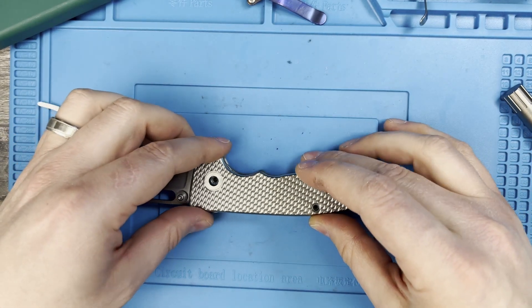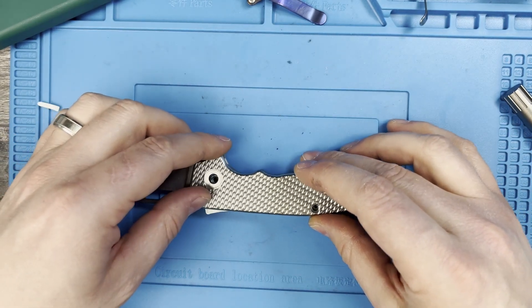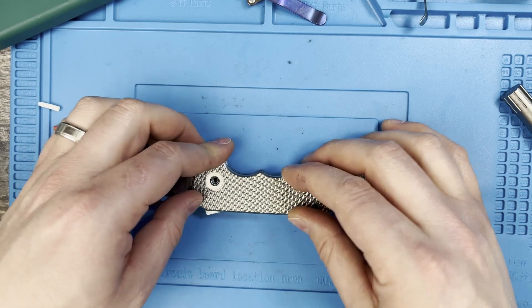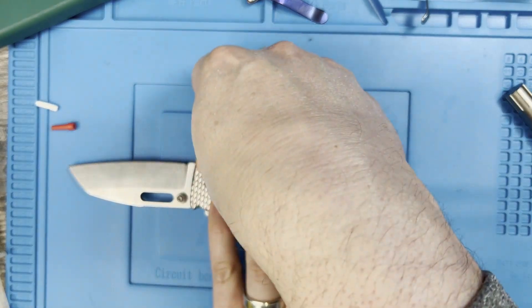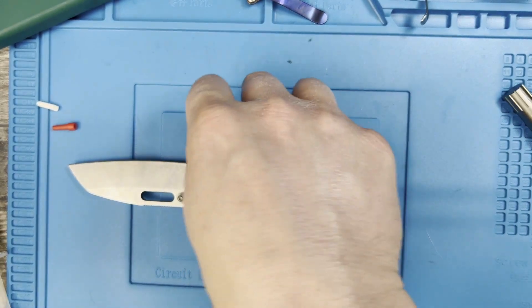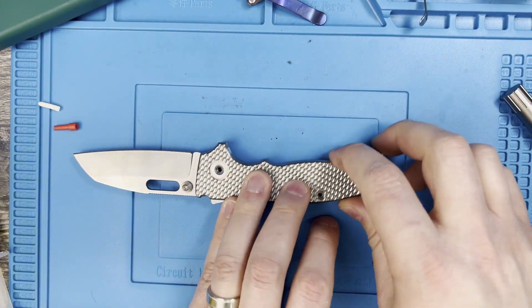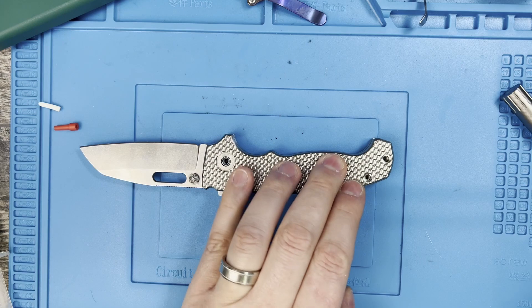Go ahead and reinstall the outer shell here. Should go together nicely because they gave you a little bit more tolerance here. There we go, there we go, there we go. And then that's it, now you just need to install your pivot.